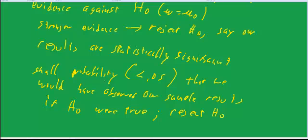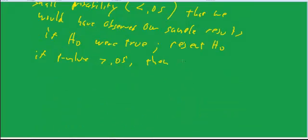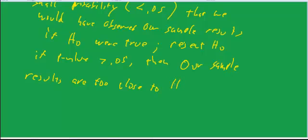And then on the other hand, if we had a probability, if the p-value is greater than 0.05, then our sample results are too close to H-naught to reject it.